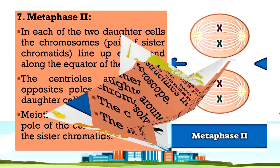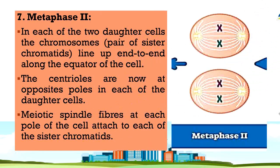In metaphase 2, in each of the two daughter cells, the chromosomes — pairs of sister chromatids — line up end-to-end along the equator of the cell. The centrioles are now at the opposite poles in each of the daughter cells. Meiotic spindle fibers at each pole of the cell attach to each of the sister chromatids.